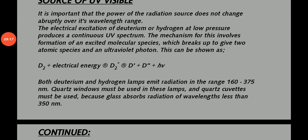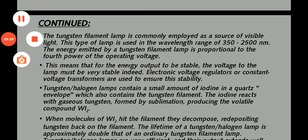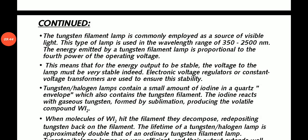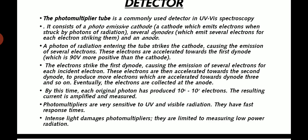Both deuterium and hydrogen lamps emit radiation in the range 160 to 375 nm. Quartz windows must be used in these lamps, and quartz cuvettes must be used because glass absorbs radiation at wavelengths less than 350 nm. A tungsten filament lamp is commonly employed as a source of visible light. This type of lamp is used in the 350 to 2500 nm range. This means that for energy output to be stable, the voltage of the lamp must be constant. Electronic voltage regulators or constant voltage transformers are used for stability. Also used are tungsten halogen lamps containing a small amount of iodine in quartz envelopes, which also contain a tungsten filament. The iodine reacts with gaseous tungsten formed by sublimation, producing volatile compounds.